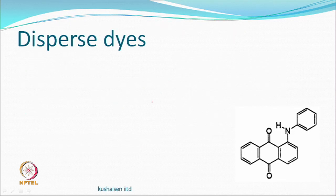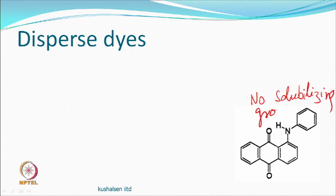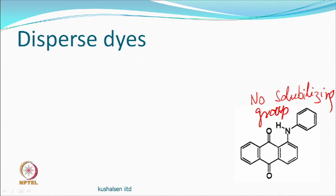Disperse dyes, as the name suggests, are dispersed in solution — they are not water soluble. Compared to the previous dye classes, this is the major difference. Looking at a disperse dye molecule example, there is no solubilizing group. They remain in particulate form because the molecules, being insoluble, aggregate together thermodynamically.